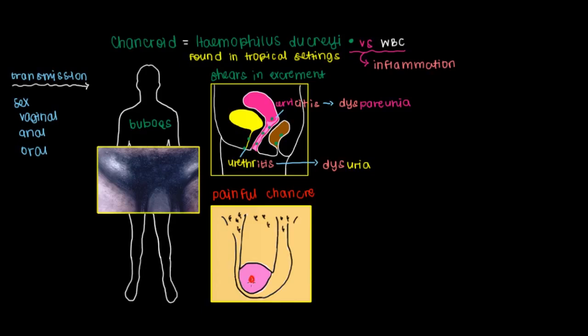A painful chancre is just this indurated lesion that happens on mucous membranes. It can happen on the tip of the penis or even on the walls of the vagina, or most commonly in women on the cervix. This chancre is indurated, so it's an indurated lesion that's happening here on the tip of the penis.